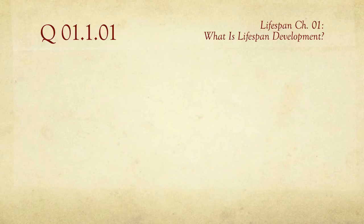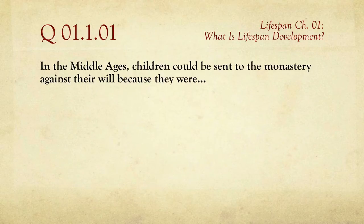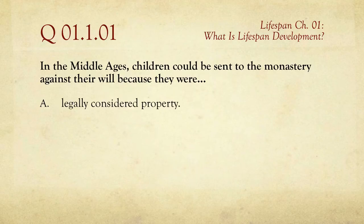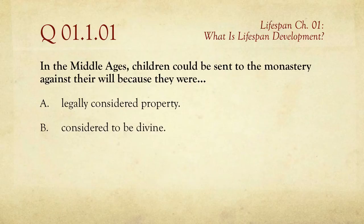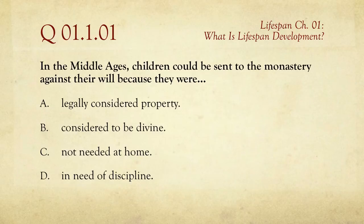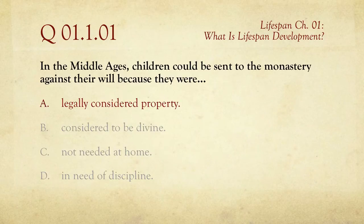The first question is: In the Middle Ages, children could be sent to the monastery against their will because they were A, legally considered property; B, considered to be divine; C, not needed at home; or D, in need of discipline. The answer is A — they were legally considered property.